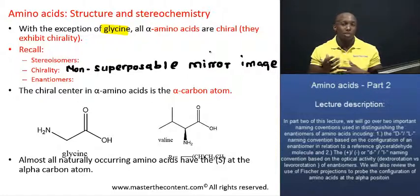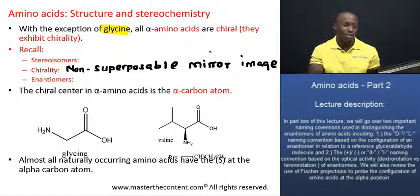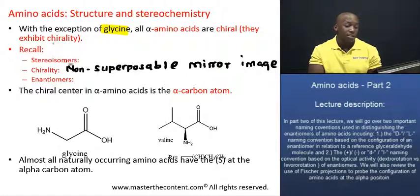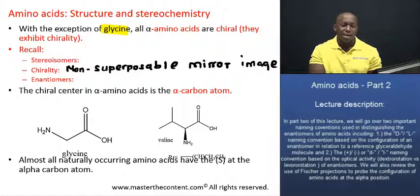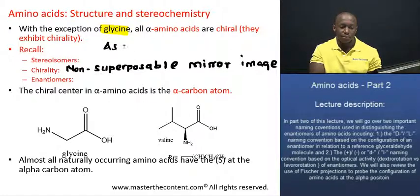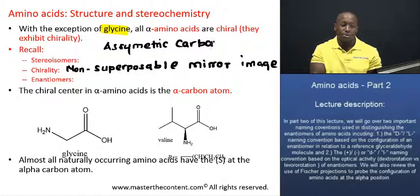That's most accurately depicted using diagrams — go back to that lecture if you do not know what I'm talking about. What I also want to mention is that chiral centers are basically asymmetric molecules, or in the case of amino acids, we'll be talking about asymmetric carbons.